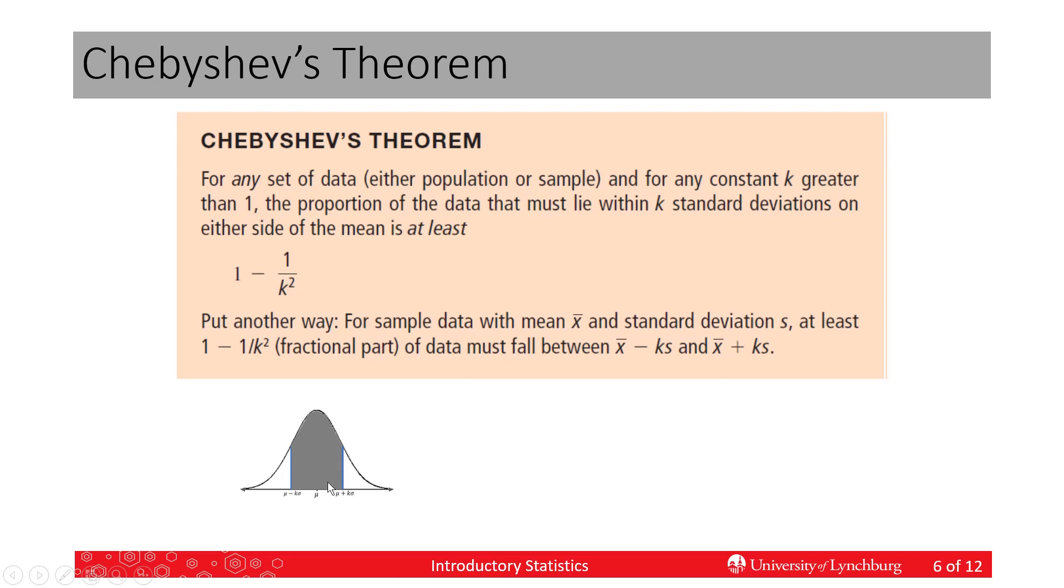And Chebyshev gives us the minimum area that's shaded in here, the minimum area. Now, I did draw this using a bell shape or normal curve, but it doesn't have to be. It can be any shape. It could be a u-shaped if I wanted.